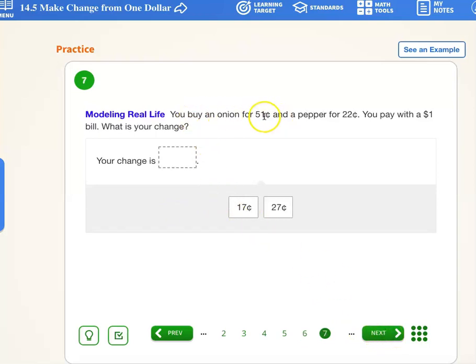You buy an onion for 51 cents and a pepper for 22 cents. You pay a dollar. What is your change? Well, let's see. I spent 51 cents and I spent 22 cents. If I add those together, I always start in the one column, right? No matter what. So it goes three, five and two is seven. So I spent 73 cents, but I started with how much? Oh yeah. A dollar.